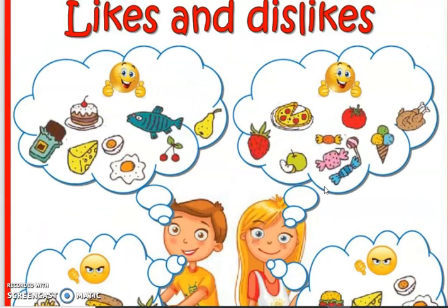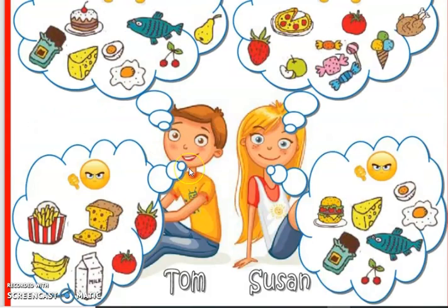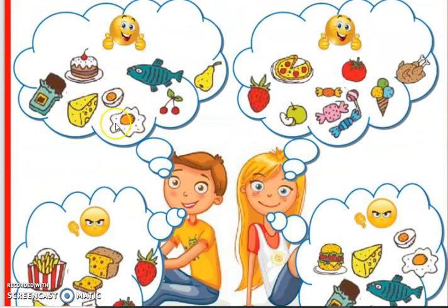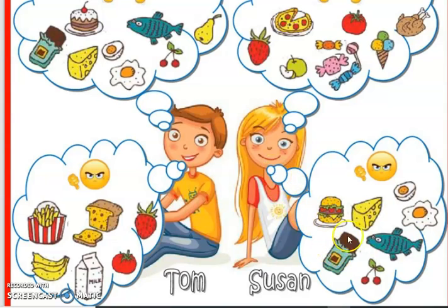In this worksheet, you can practice likes and dislikes for the third person singular — he doesn't like, or she doesn't like, or likes. For example, Tom is this boy's name. Tom likes eggs. Tom doesn't like chips. And here's Susan. Susan likes sweets. Susan likes apples. She doesn't like chocolate. She doesn't like fish.